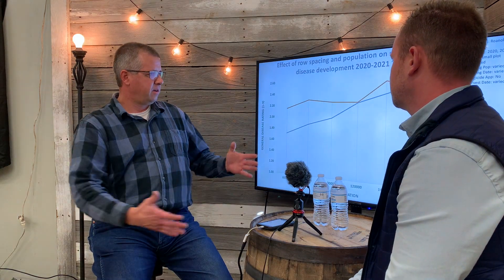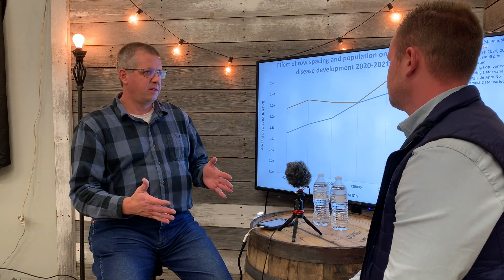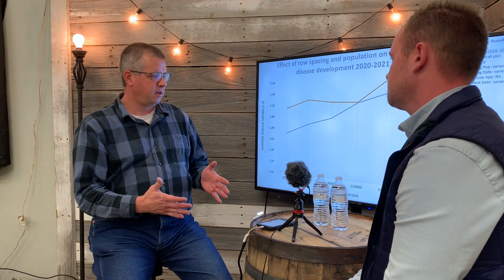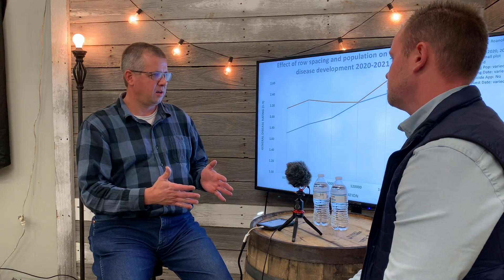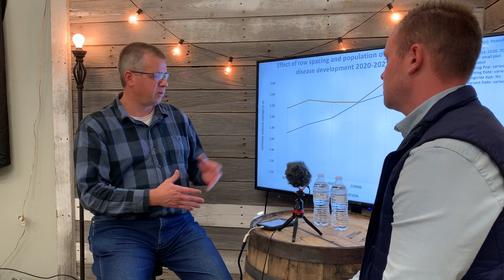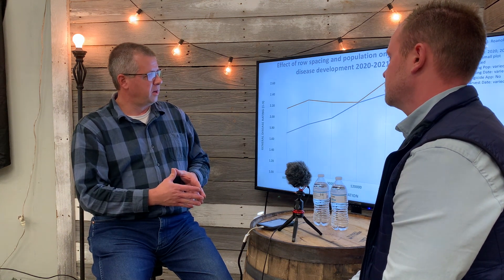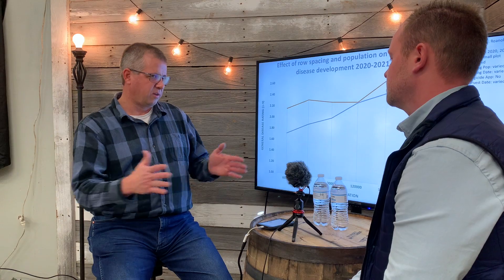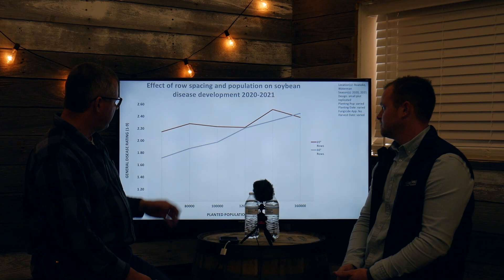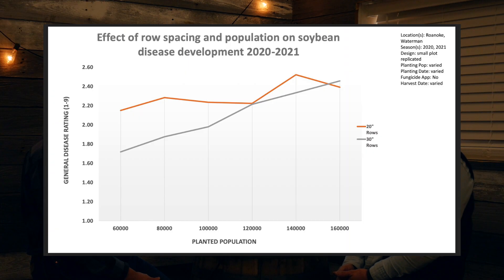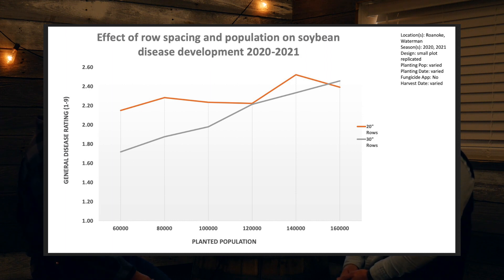Do narrower rows make a difference in disease development? We know lower population can help with disease development. As we go higher in population we see more disease development. The 20-inch rows have slightly more disease development than 30-inch rows, but when you put that on a one-to-nine scale rather than a one-to-2.6 scale, that difference is minimal.